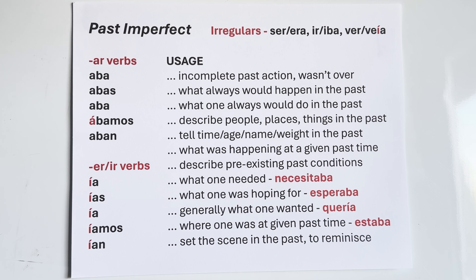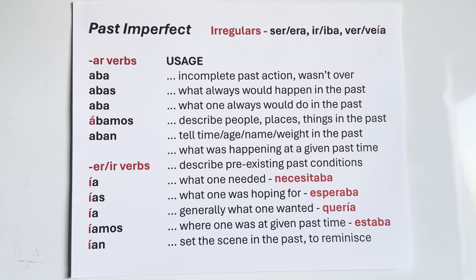For ER and IR verbs, the endings are identical: ía, ías, ía, íamos, ían. For example, comer: comía mucho pan — I used to eat a lot of bread. Comías — you used to eat a lot. Comía — he or she used to eat a lot. Comíamos — we used to eat a lot. Comían — they used to eat a lot.